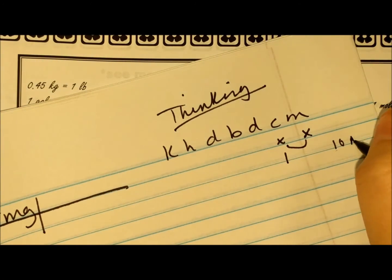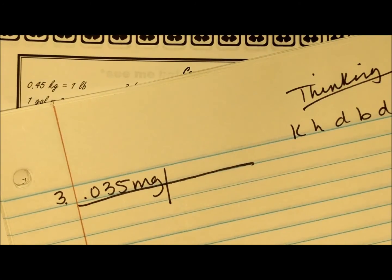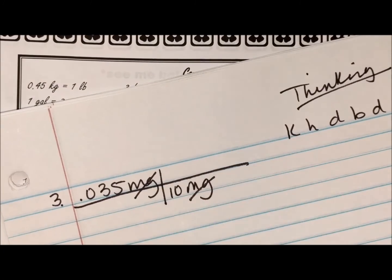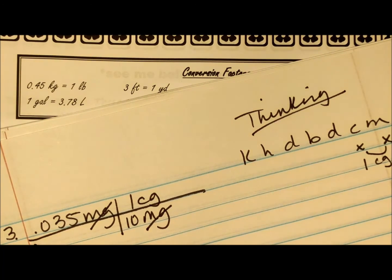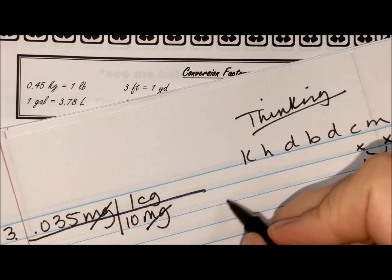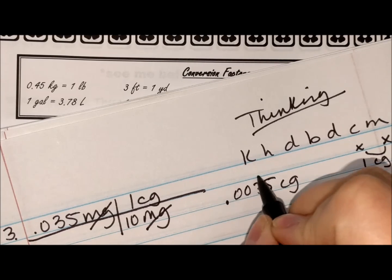So the 10 milligrams is going to go on the bottom so those guys cancel out. The one centigram goes on top. So 0.035 milligrams times one divided by 10. That is 0.0035 centigrams.